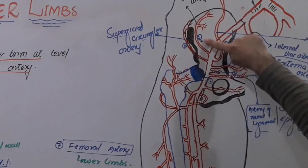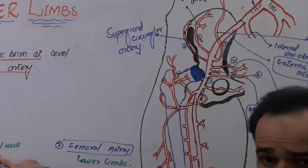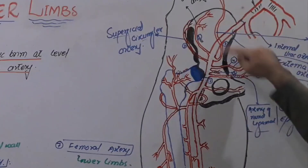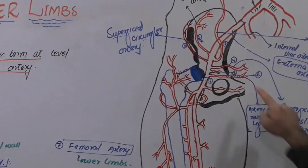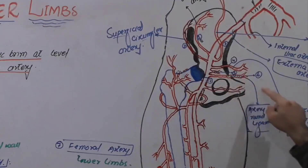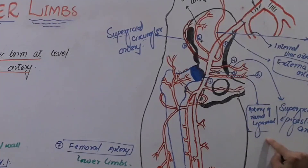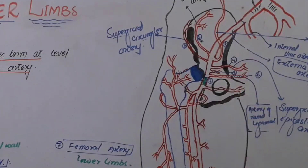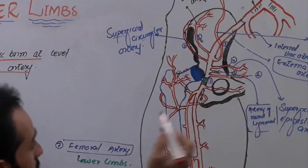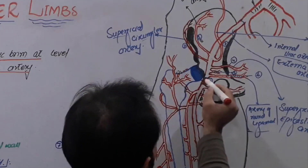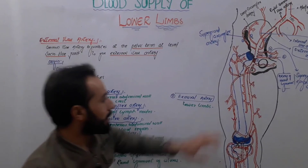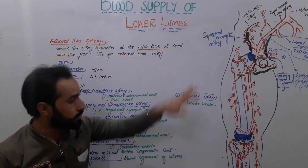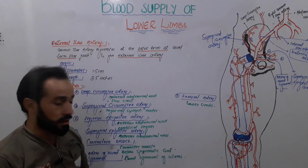The seven branches of the external iliac artery are: first, the deep circumflex artery; second, the superficial circumflex artery; third, the inferior epigastric artery; fourth, the superficial epigastric artery; fifth, the cremasteric artery; sixth, the artery of the round ligament, present in females only; and seventh, the femoral artery, which continues distally to supply blood to the lower limb. The femoral artery and its further branches will be covered in the next lecture. Stay with us to watch the full lecture on the blood supply of the lower limb.